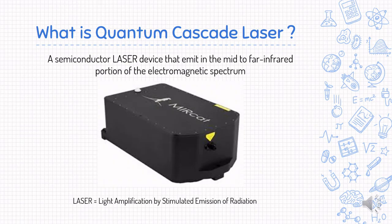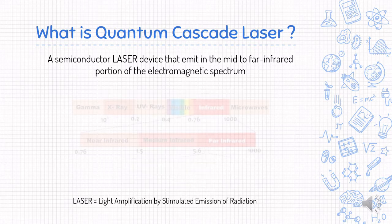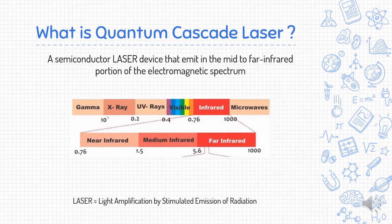Quantum Cascade Laser is a semiconductor laser device that emits in the mid to far infrared portion of the electromagnetic spectrum. It is different from conventional lasers in terms of working principle and emitted photon wavelength.